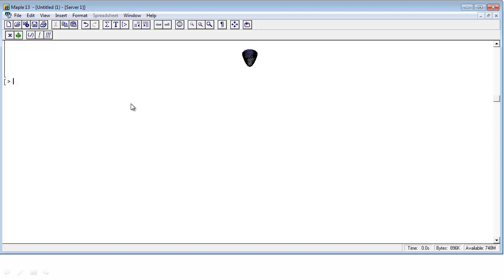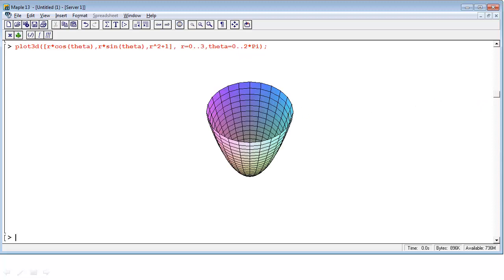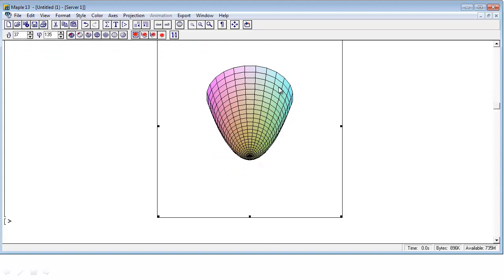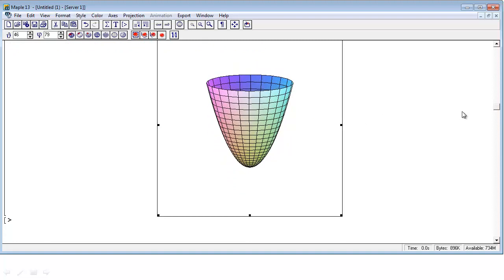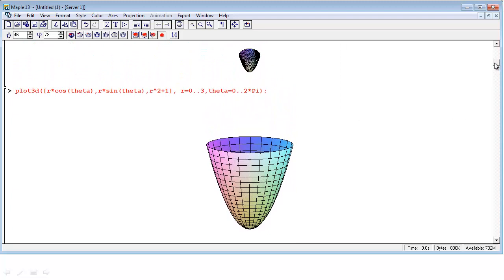We could graph our elliptic paraboloid that way as well. Let's use Maple. Our command is plot3d. Our parametrization gives our coordinates. The x value was r cosine theta, the y value was r sine theta, and the z value was r squared plus 1. r goes from 0 out to 3, and theta just needs to look all the way around, so 0 to 2 pi would do it. There we go. So we get our elliptic paraboloid again. Notice that since this had symmetry around the z axis, it was nicely parametrized using cylindrical coordinates.